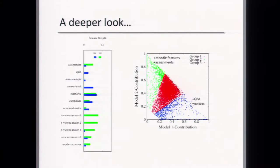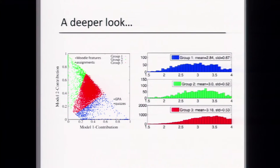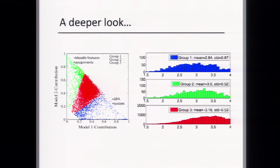The green points are students for whom the first model is more important in determining the final grade — those rely more on Moodle interaction features and the assignment-related features. The blue points are students for whom the second model dominates, and for them the prediction is primarily driven by GPA — how well they've been performing historically. We then analyzed whether these subsets of students have different characteristics.